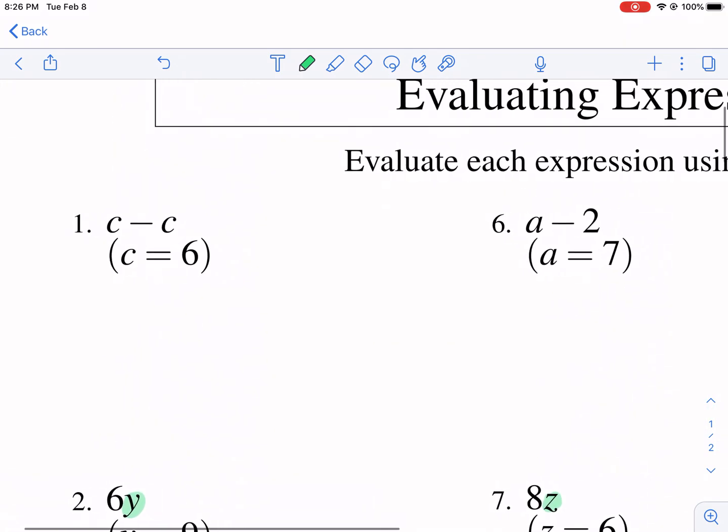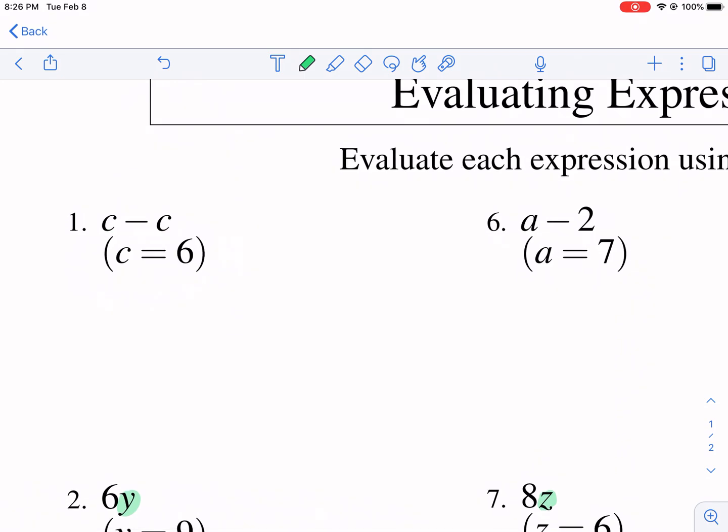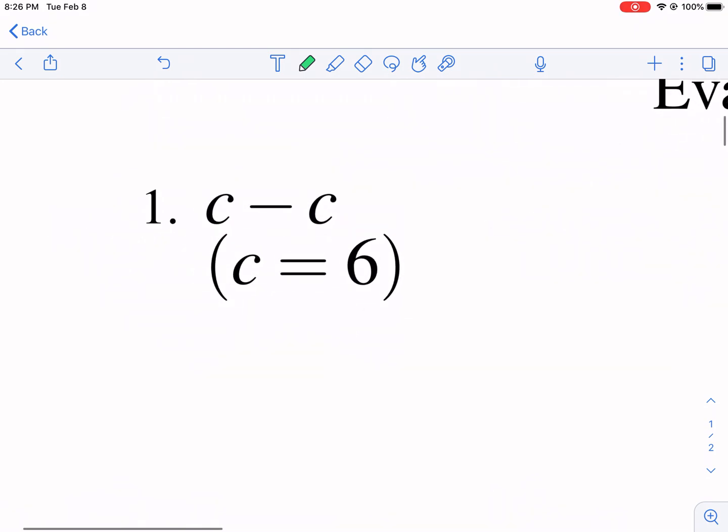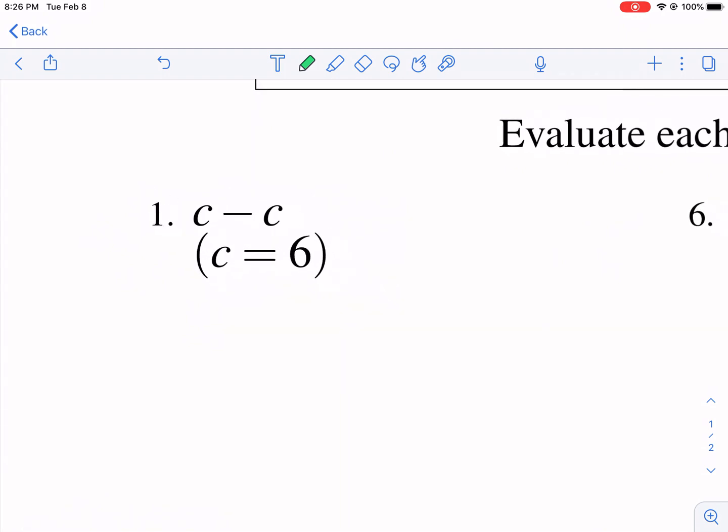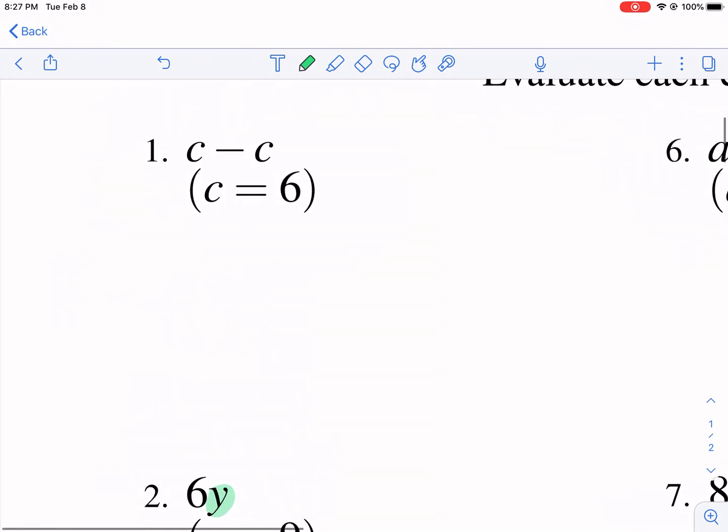So let's go ahead and start. In this case we're just evaluating. That means we're going to be plugging in a number for these letters and then figuring out what the answer is. So for this we know that c minus c, so some unknown amount minus that same unknown amount, and we're told that that amount is 6.